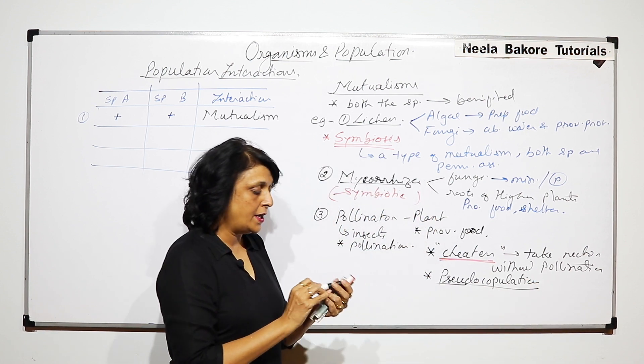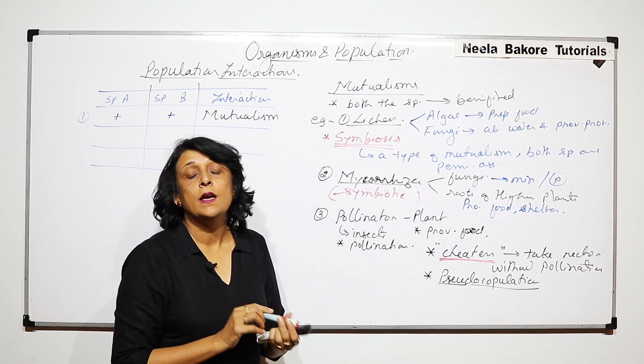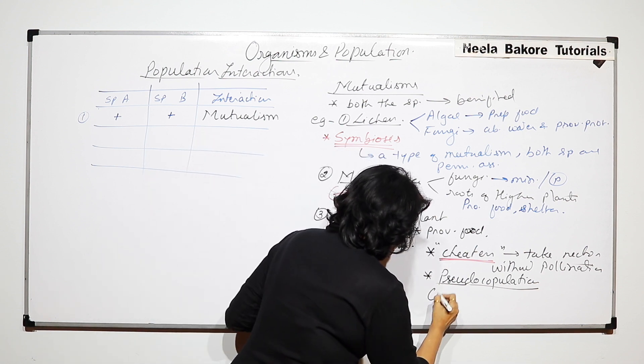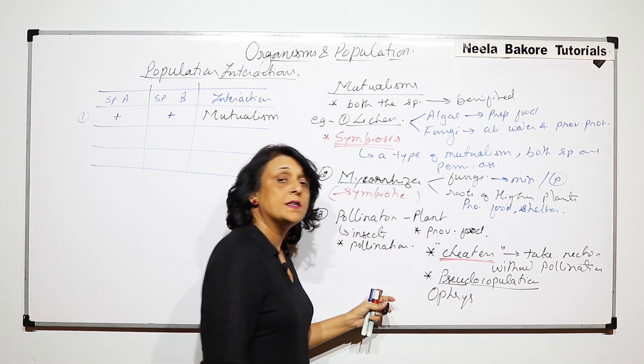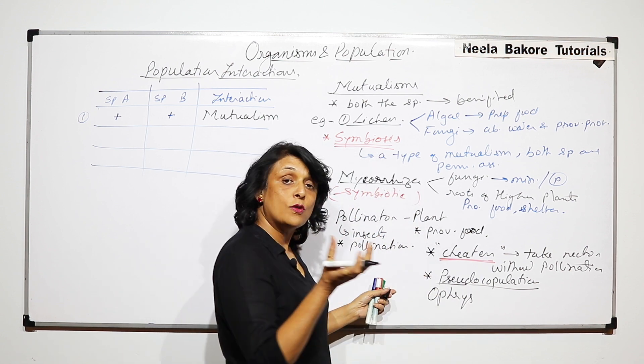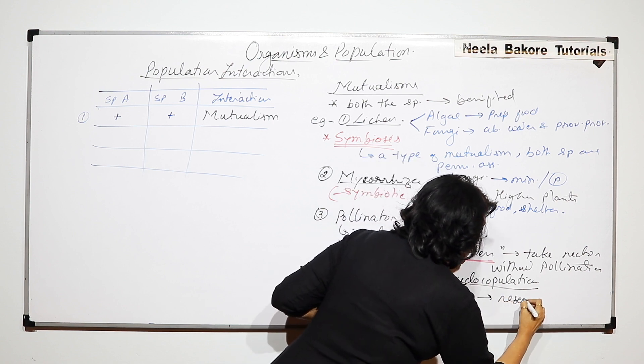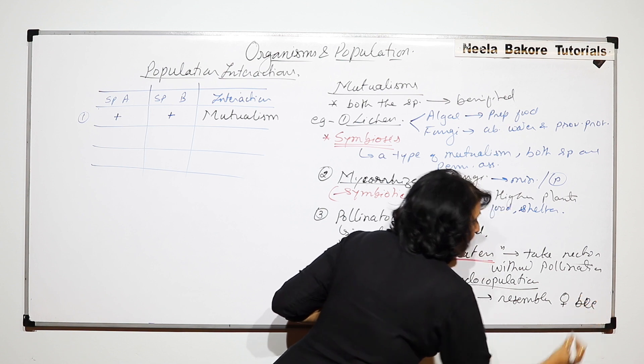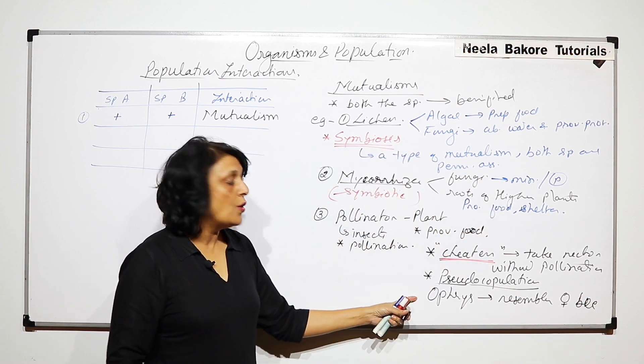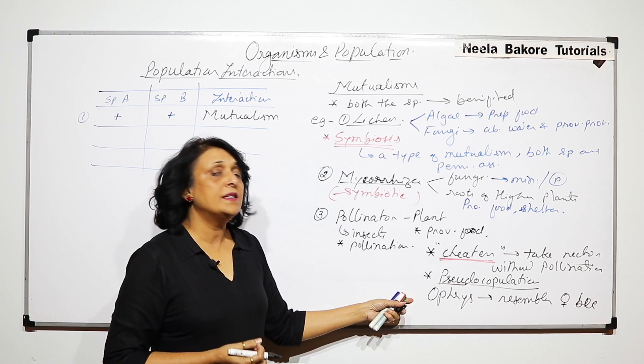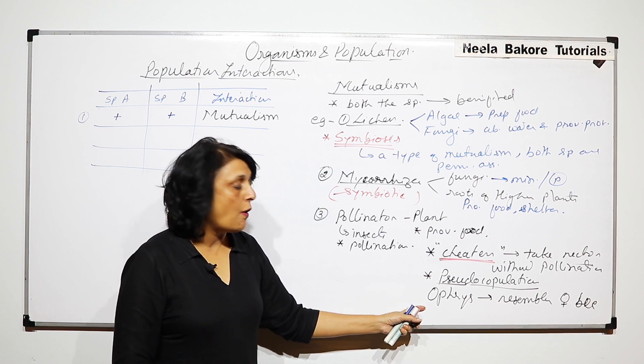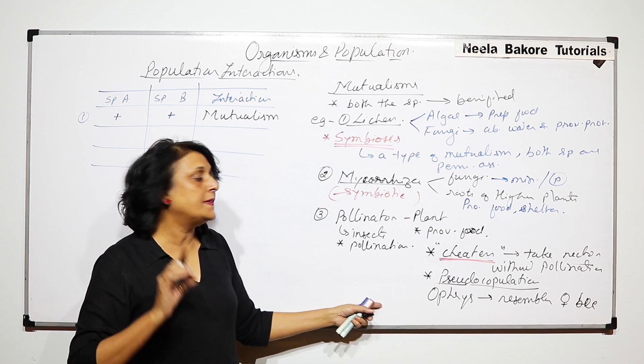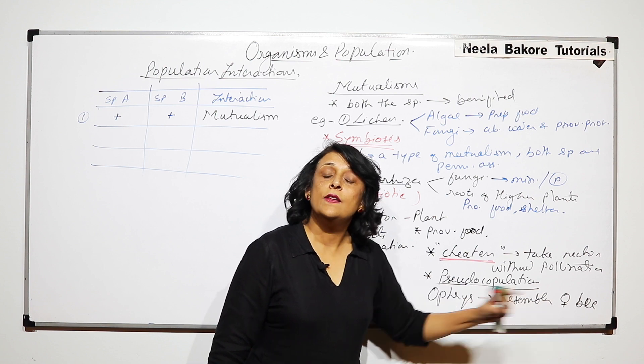In a particular type of orchid which is found in Mediterranean, the name of the orchid is Ofris. Ofris resembles, the flower of Ofris resembles a female bee. Bees are the main pollinators. So these orchids, they are beautiful looking flowers and in case of Ofris, the petals, their pattern, their color pattern and the shape, everything is exactly like the female bee.